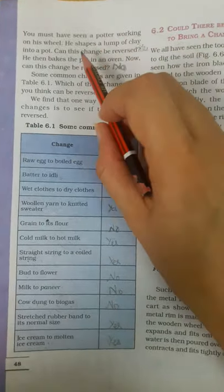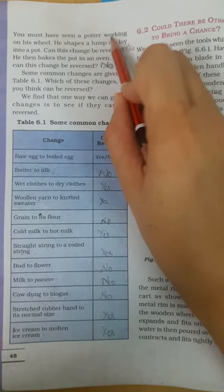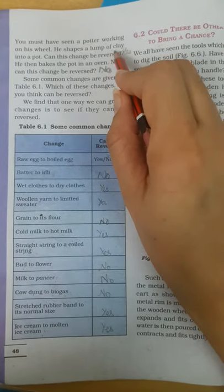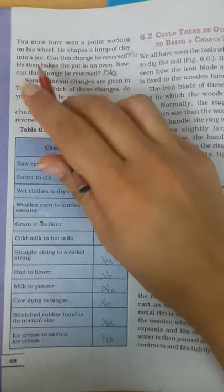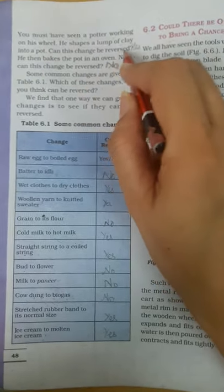Now a potter working on his wheel - potter means kumhaar. When he shapes a lump of clay into a pot - ghada banata hai mitti se. Can this change be reversed?